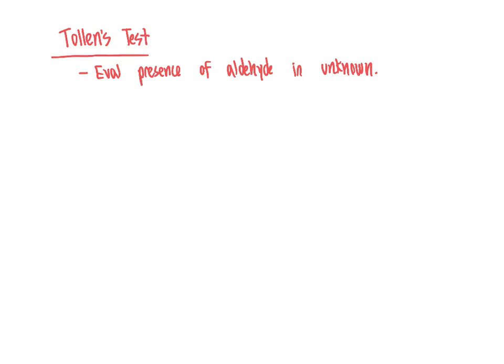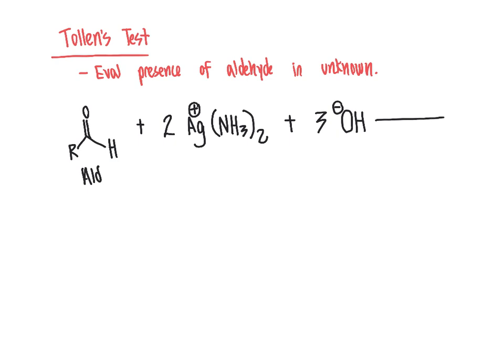The way that it works is if we have an aldehyde molecule, and specifically this has to be an aldehyde, we take our aldehyde and react it with Tollens reagent, which is in the balanced equation two silver with a positive formal charge bonded to two NH3 groups in a basic environment of hydroxide anions, specifically three of them in the balanced chemical equation. This is generally done in an aqueous solution.